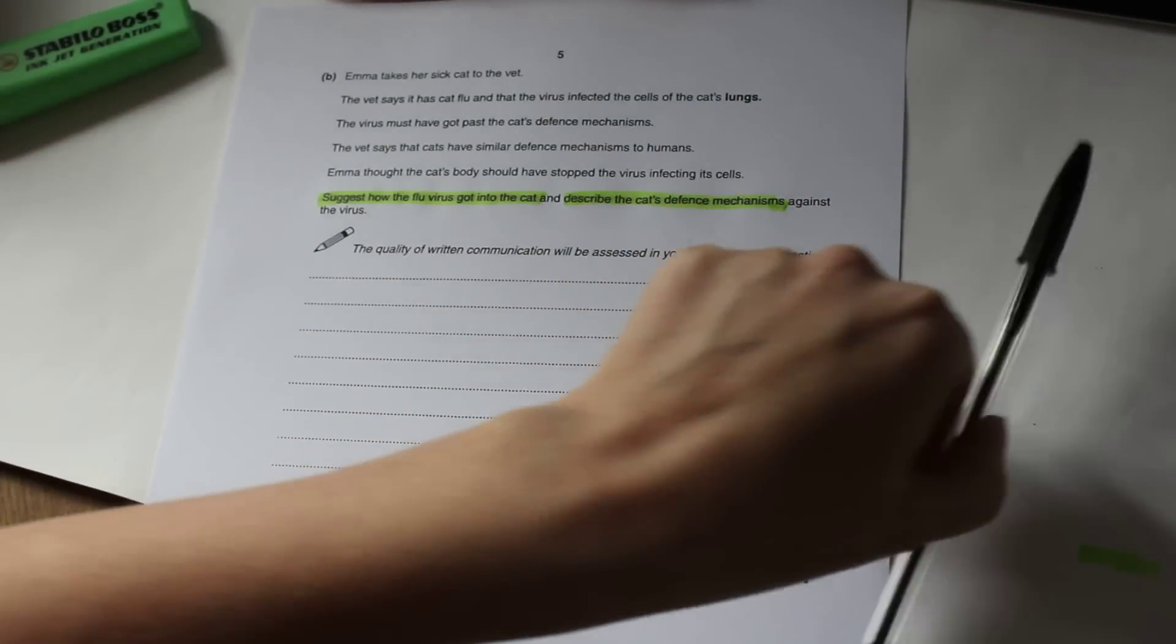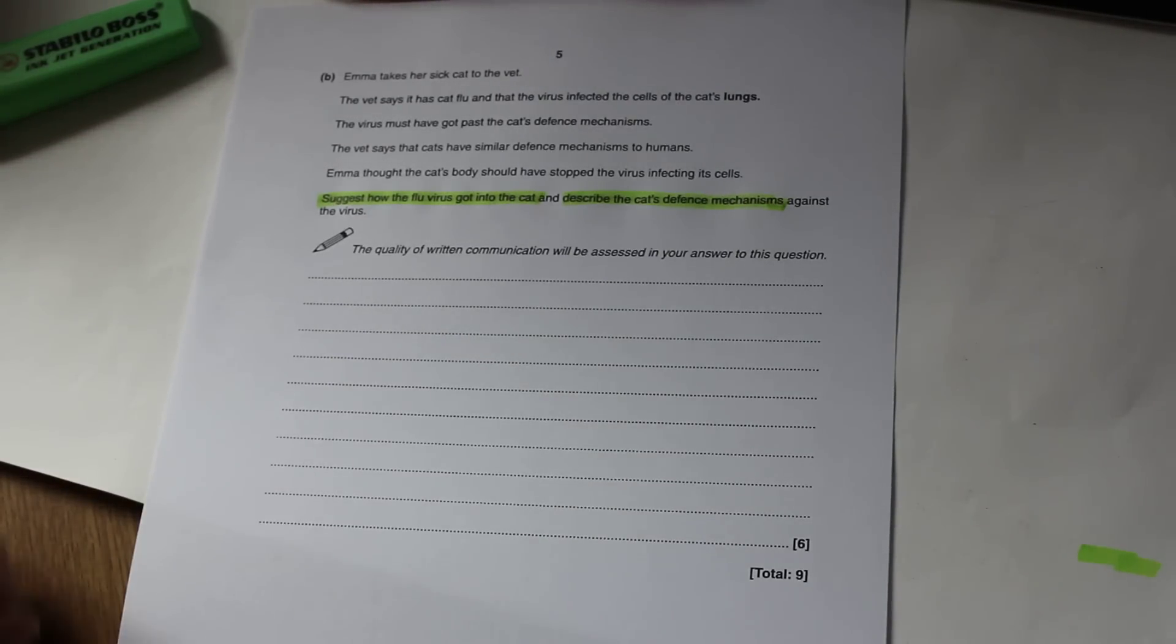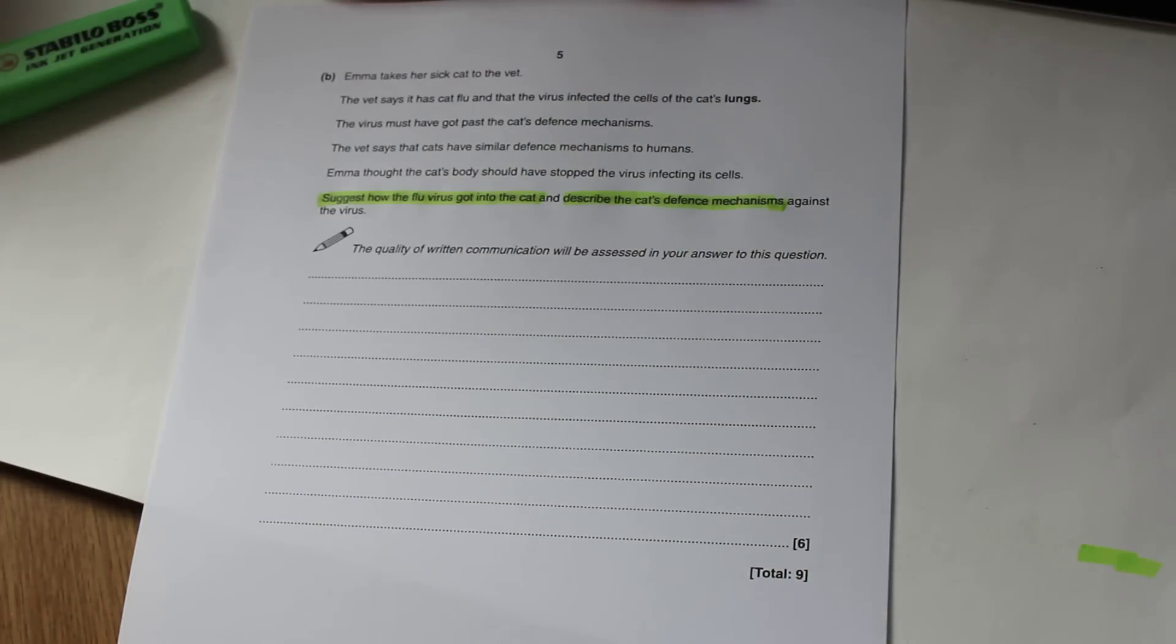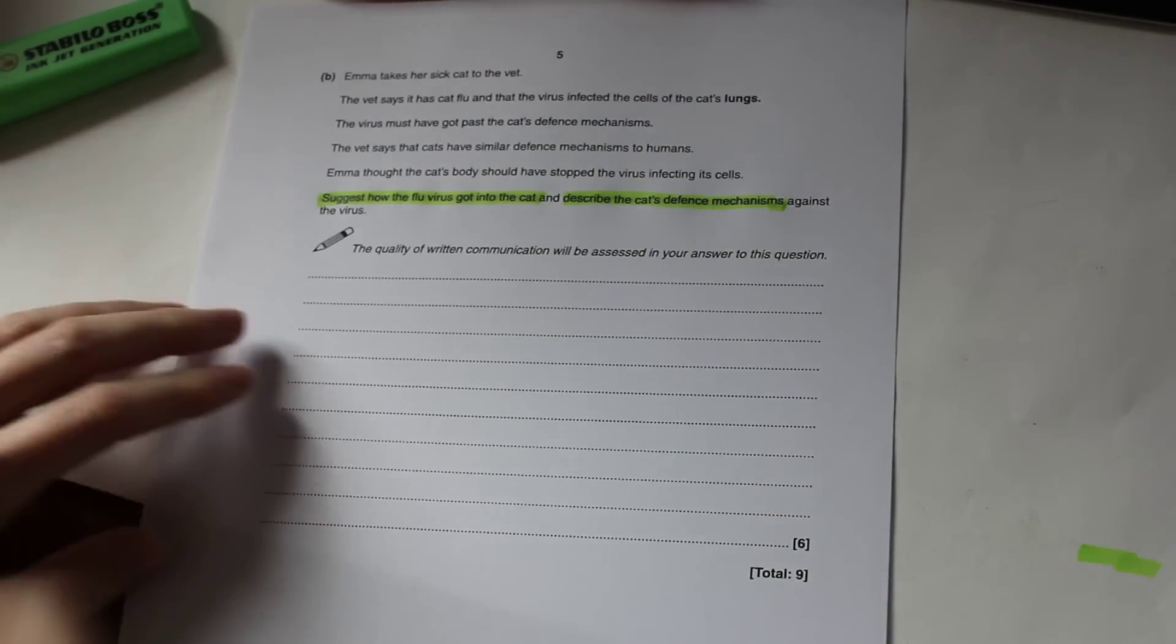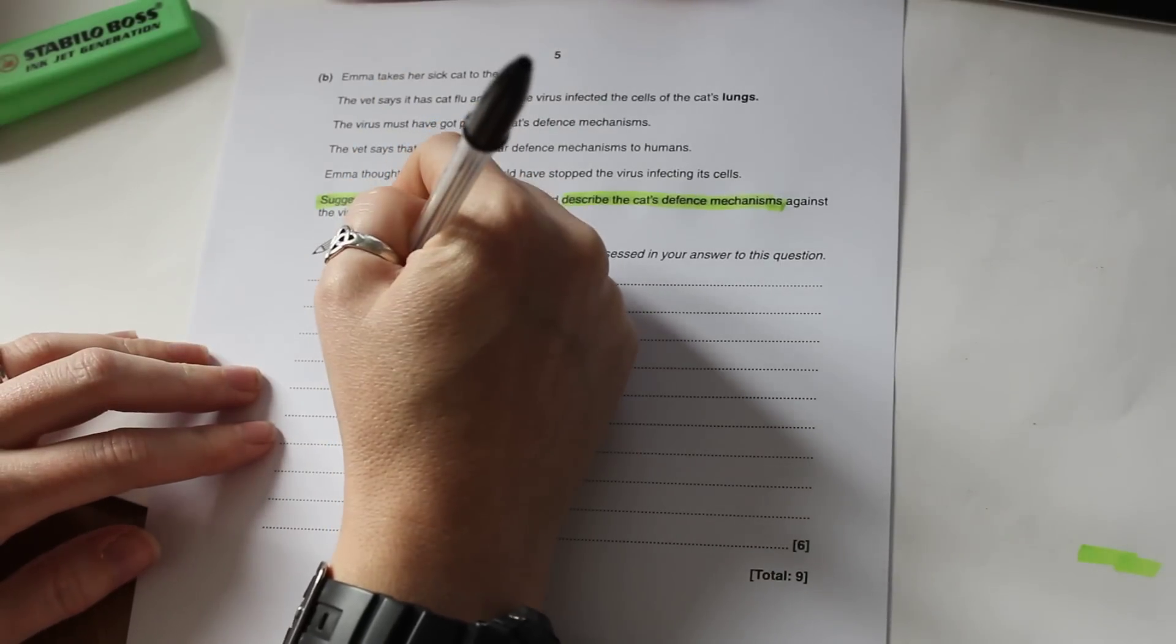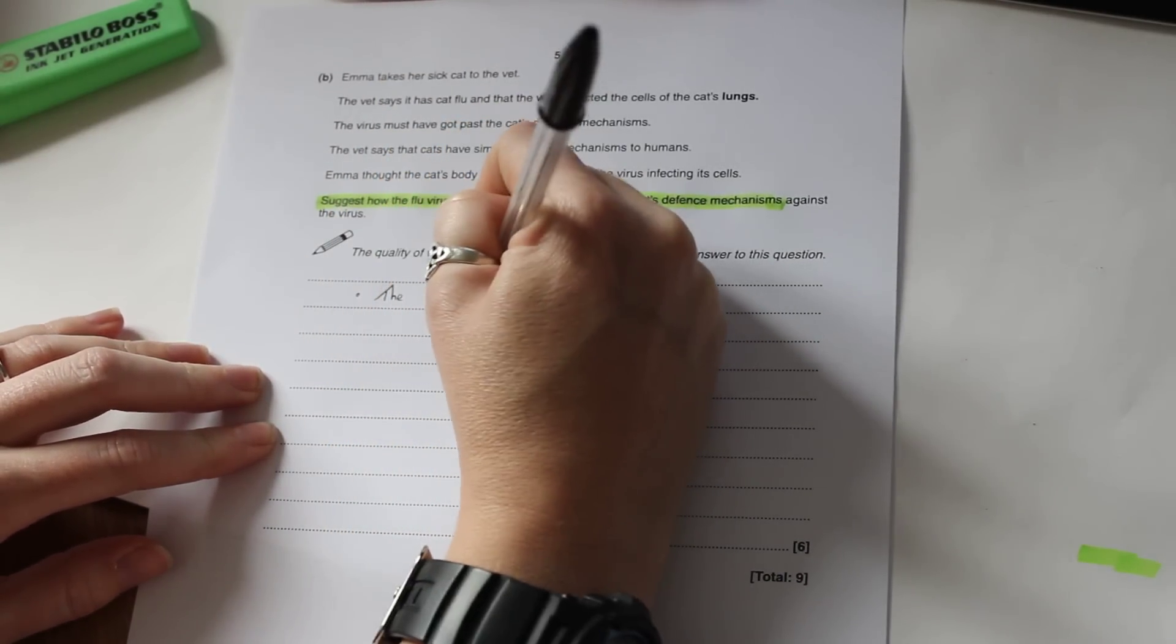So when we actually come to structure our answer the first thing we can do suggest how the flu virus got into the cat. And earlier on in the question it tells us up here that the cat got the virus from the cells of the lungs. So that hopefully tells you that the cat breathed it in. So that's our first point that we can write down. And you can use bullet points for this which is quite nice. So our first thing I'm going to say is the cat breathed in the virus.